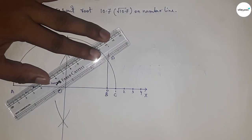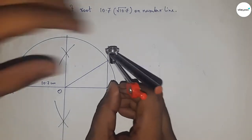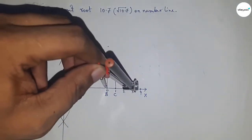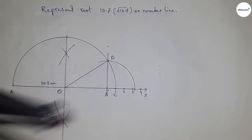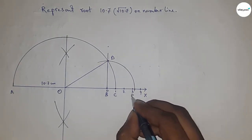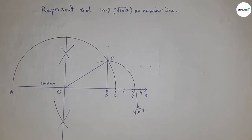Now taking the length BD by compass to draw an arc which meet the number line at a point E. And this is the representation of root 10.7 on number line.